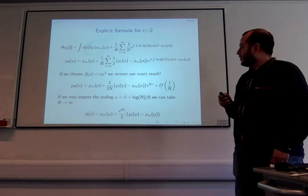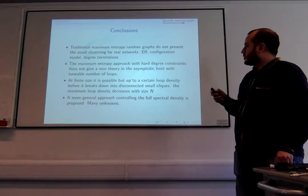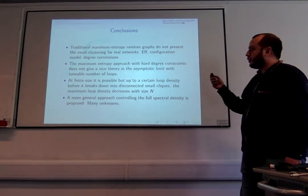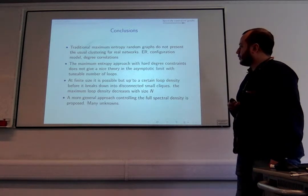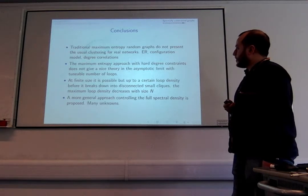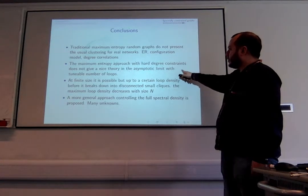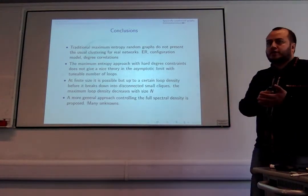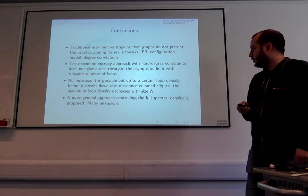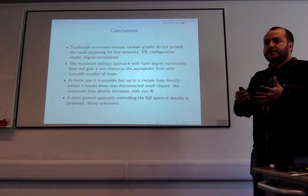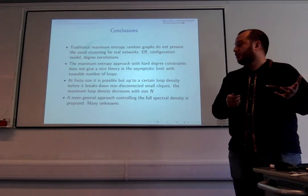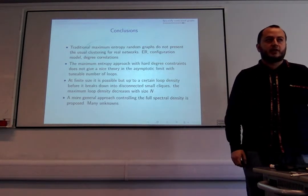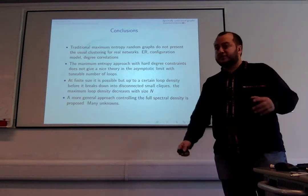To summarize: traditional maximum entropy random graphs do not exhibit clustering as seen in real networks, even with degree correlations or a degree distribution. A maximum entropy approach with a hard degree constraint and soft triangle constraint gives a theory where you can control loops, but not in a well-defined asymptotic limit — only a controllable finite-size theory with limited range. A more general approach controlling the full spectral density is outlined but still has many open questions.